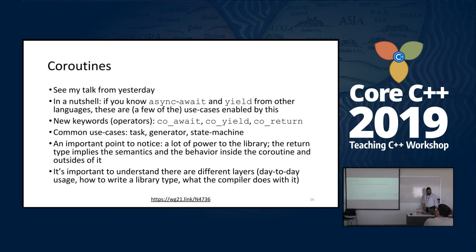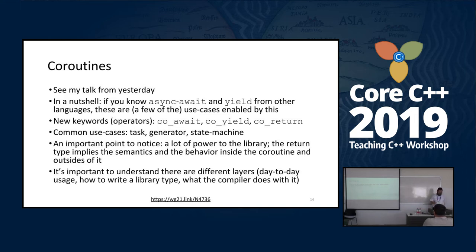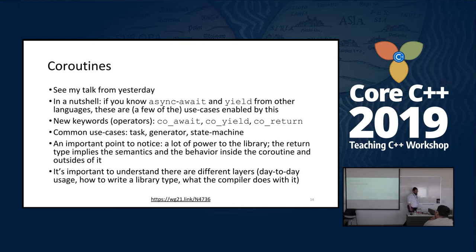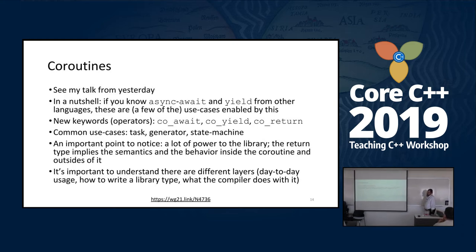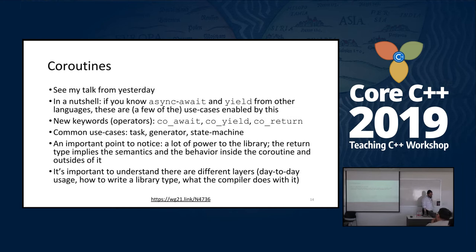And concepts — concepts is a way to constrain our templates and will be discussed later. I want to put it in the context of more changes that happen to templates. And coroutines — I will not talk about coroutines again; I had a talk about it yesterday. In a nutshell, if you know async/await from other languages, or yield, it allows those use cases and much more.